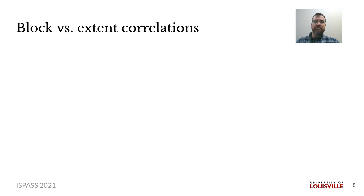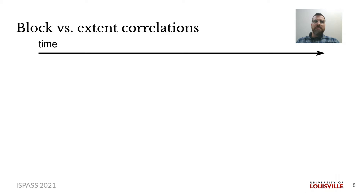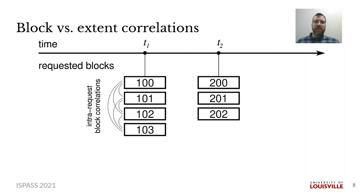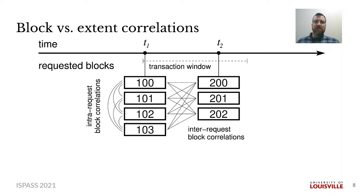An important distinction is the difference between block and extent correlations. Consider a timeline of events. First, the storage system receives a request for four contiguous blocks. Since these blocks are requested together, they are each correlated with one another. We call these intra-request block correlations, and their number is quadratic on the number of blocks — in this case, four choose two. Suppose that a second request for more blocks arrives shortly after the first. Since these two events occur briefly together in time within the transaction window, these new blocks are correlated with the first few. These are inter-request block correlations, and their number is also quadratic — in this case, four times three, or twelve.